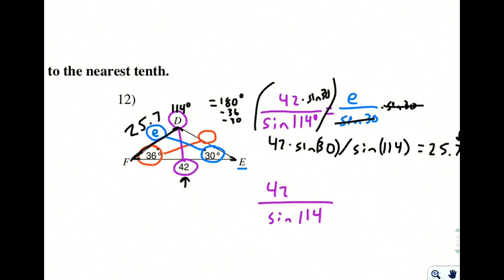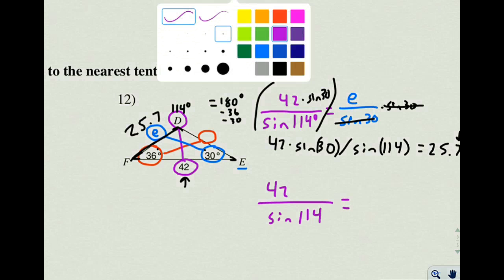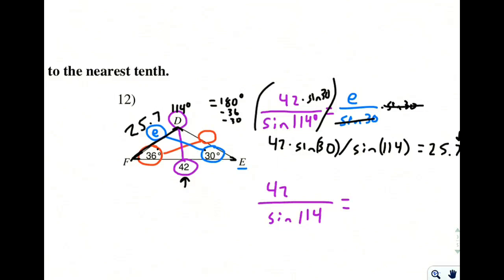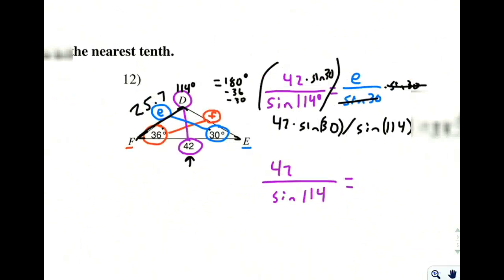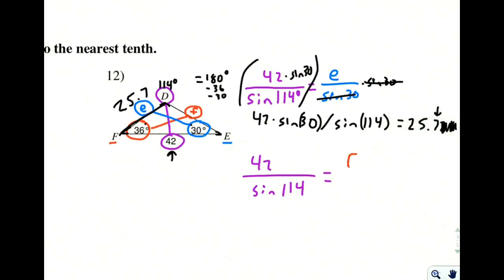the number you just calculated at 25.7 is because you rounded that answer and then if you round again, that double rounding is going to cause your answer to be off quite a bit. Now we never gave this a label. Angle F is across from side F. So we're going to say side F over sine of 36 degrees.